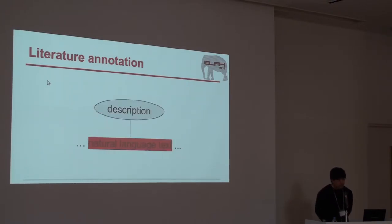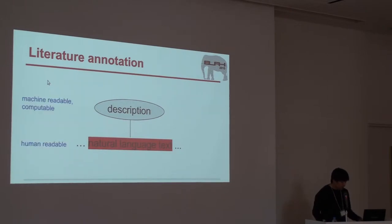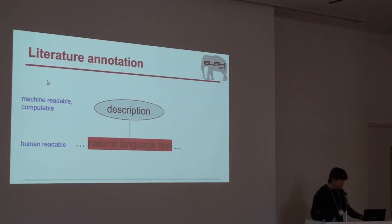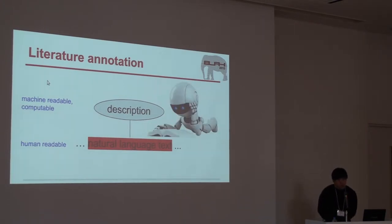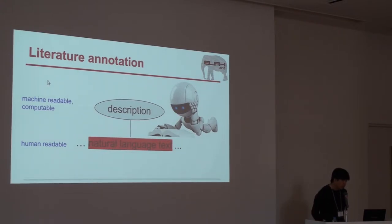Literature annotation is all about linking the literature with formal descriptions that machines can understand and perform computation on. Eventually, we would like to let machines read literature and perform computation to find new discoveries.